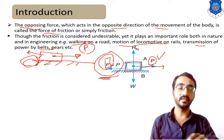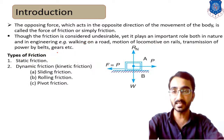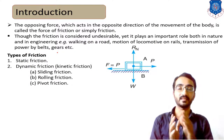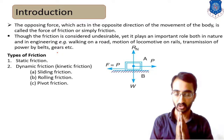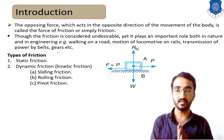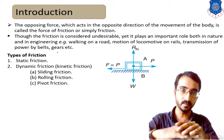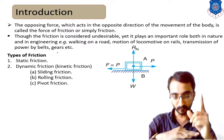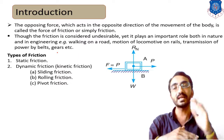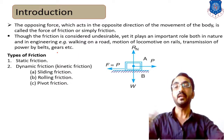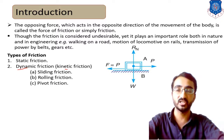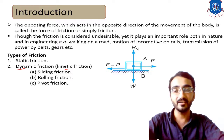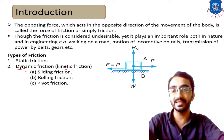Friction is classified into two main categories: static friction and kinetic friction. Static friction occurs when the body is in a steady state condition. When the body is in motion, it is known as dynamic or kinetic friction. Kinetic friction is further classified into three categories: sliding friction, rolling friction, and pivot friction.